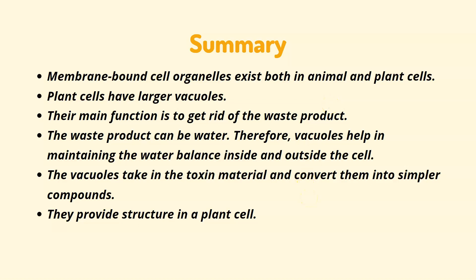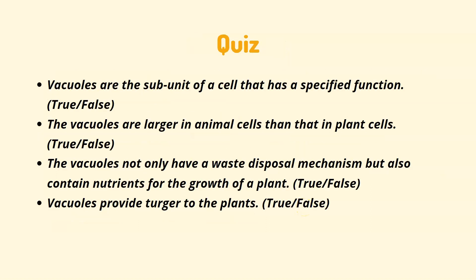There is a small quiz for you students. First: vacuoles are the subunit of a cell that has a specified function to perform — true or false? Second: vacuoles are larger in animal cells than in plant cells — true or false? Third: vacuoles not only have a waste disposal mechanism but also contain nutrients for the growth of a plant — true or false? Fourth: vacuoles provide turgor, meaning rigidity, to the plants — true or false?